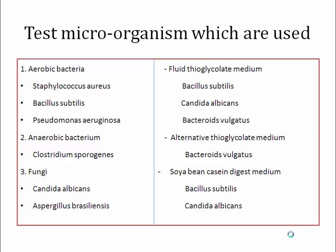Different types of test microorganisms are used for different media and conditions. For aerobic conditions, three microorganisms commonly used are Staphylococcus aureus, Bacillus subtilis, and Pseudomonas aeruginosa. For anaerobic bacteria, Clostridium sporogenes is used. For fungi, Candida albicans and Aspergillus are used. In Fluid Thioglycollate Medium, Bacillus subtilis, Candida albicans, and Bacteroides vulgatus are used. In Alternative Thioglycollate Medium, Bacteroides vulgatus is used. In Soybean Casein Digest Medium, Bacillus subtilis and Candida albicans are used.